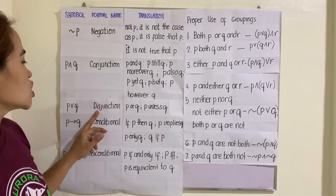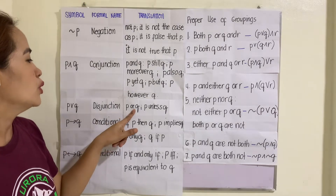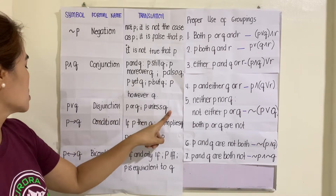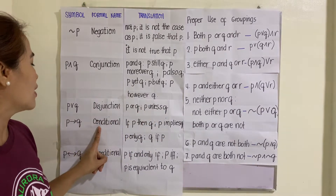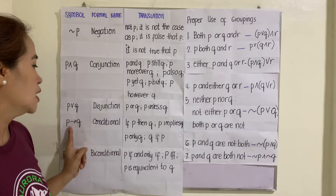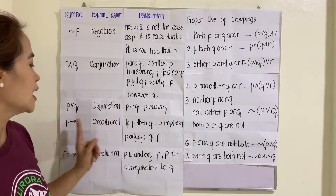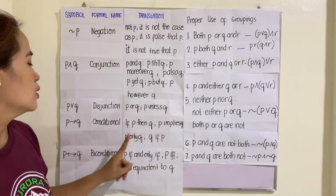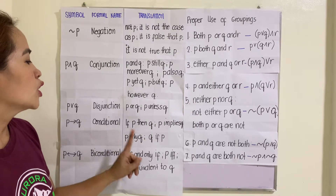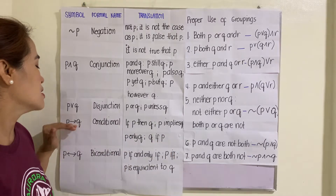For disjunction, we have this symbol. It translates as 'P or Q' or 'P unless Q' — those are the two translations. For the fourth one, we have the conditional. This is the symbol. It translates as 'if P, then Q,' 'P implies Q,' 'P only if Q,' or 'Q if P.'